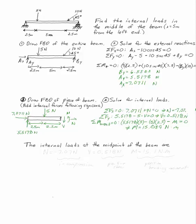Once I've done that, all I have to do is answer the question. The internal loads at the midpoint are N equals minus 7.07 newtons, V is 0.518 newtons, and M is 15.1 newton meters.